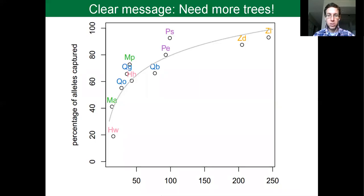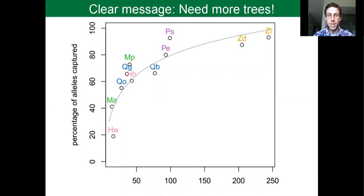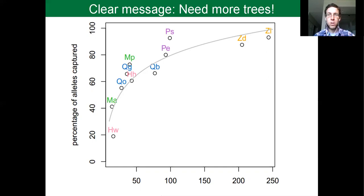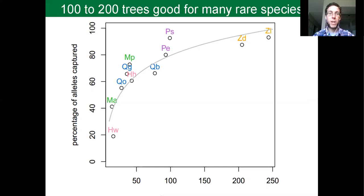If we plot the number of plants against genetic diversity conserved, we see there's a strong relationship. The clear message is that to get more genetic diversity in our botanic gardens, we need more trees in our collections. These samples represent the collective efforts of dozens — in some cases up to 30 — botanic gardens. Our work suggests that for many rare plant species, 100 to 200 plants should do a pretty good job of conserving most of the species' genetic diversity.